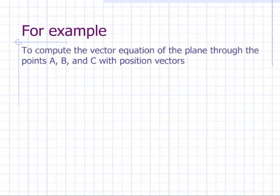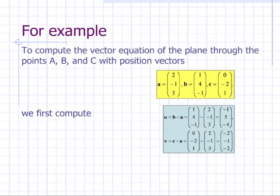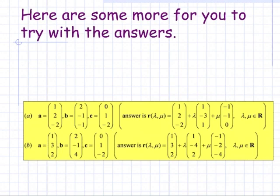For example, to compute the vector equation of the plane through points A, B and C with position vectors A = (2, -1, 3), B = (1, 4, -1), and C = (0, -2, 1), we first compute the two direction vectors: U = B minus A = (-1, 5, -4), and V = C minus A = (-2, -1, -2). Thus the required vector equation of the plane is R(lambda, mu) = (2, -1, 3) plus lambda times (-1, 5, 4) plus mu times (-2, -1, -2). As lambda and mu change, the plane is traced out.